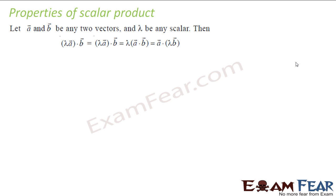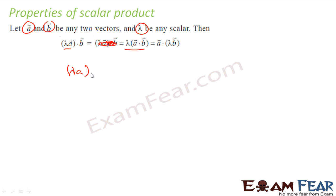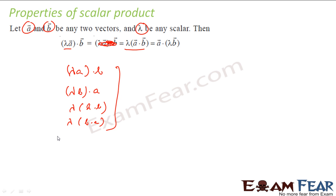Let's take some properties of scalar product. It says that if A and B are any two vectors and lambda is any scalar, then lambda times (A dot B) equals (lambda A) dot B equals A dot (lambda B) — you multiply the scalar in any way you want, it does not matter, you will get the same value. This is the property of scalar product.